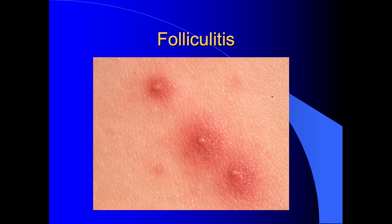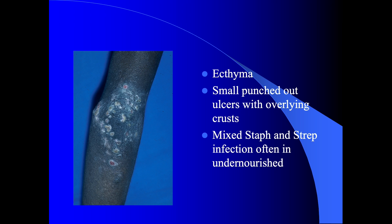Staphylococci are a common cause of superficial infection of the hair follicles, producing folliculitis. There are many causes — staphylococci, yeasts, or sterile folliculitis caused by topical agents such as tar — but staphylococcal infection is one of the most common causes. Another staphylococcal infection is ecthyma, which produces small, punched-out ulcers with overlying crusts. Very often it's a mixed infection of Staphylococcus aureus and streptococci, and it tends to occur particularly in the undernourished.